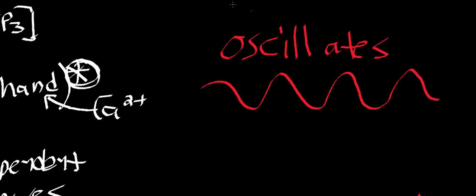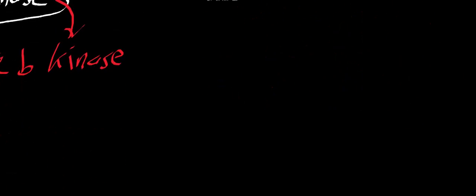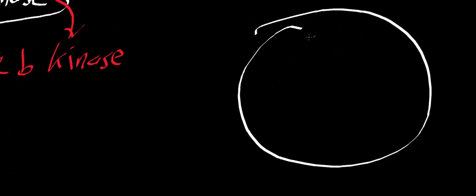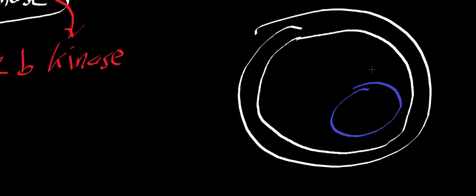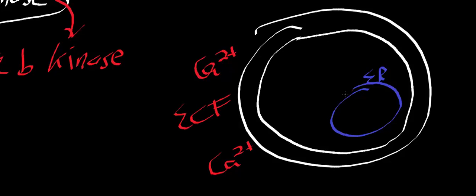Calcium ion concentration is not constant. In the extracellular fluid — if I draw a generic cell with the inner membrane of the plasma membrane and the endoplasmic reticulum — calcium ion concentrations are high in the ECF and also high in the ER. When IP3 binds to the ER ionotropic receptor, calcium comes out into the cytosol. At rest, calcium ions don't like to be in the cytosol — they prefer the ECF or the ER.